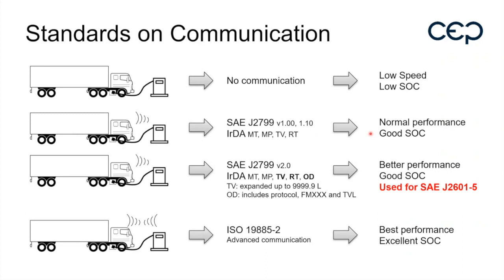With IR version 1.1, normal performance is achievable and a good SOC between 95 and 100% should be reachable. An upgrade will come to version 2 — the dash-5 will use version 2. Changes include: total volume (formerly 'tank volume') expanded from 5,000 liters to 10,000 liters, and extensive use of the optional data tab. It's very important to ensure your infrared communication is upgraded to version 2 to use dash-5.